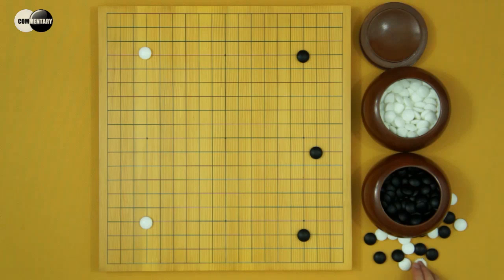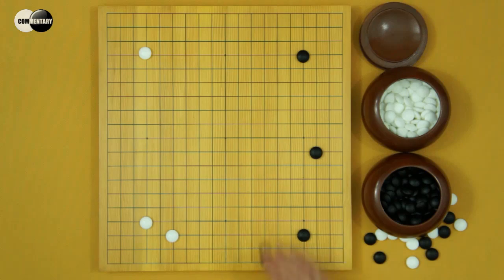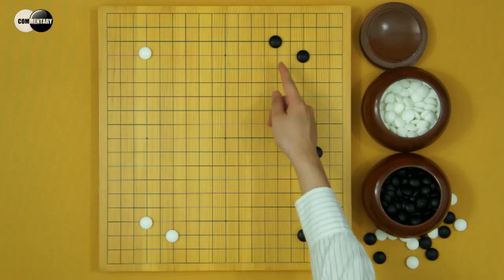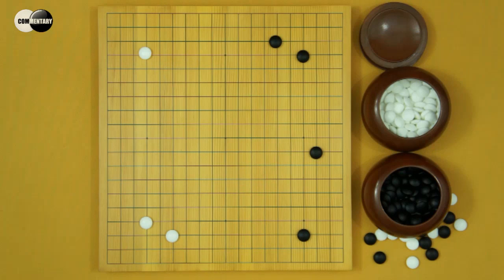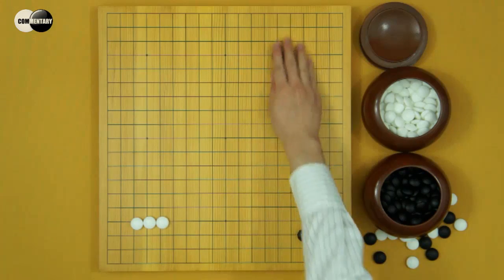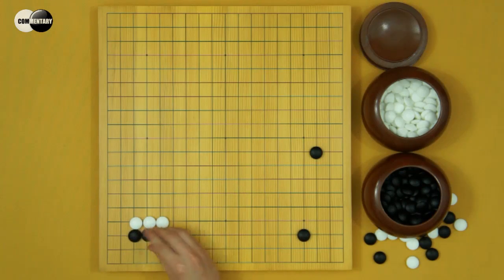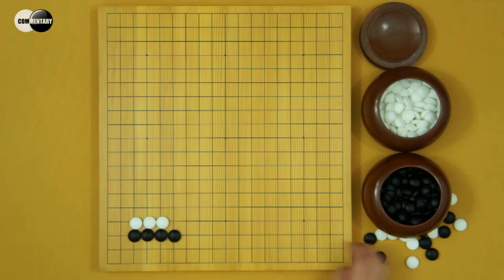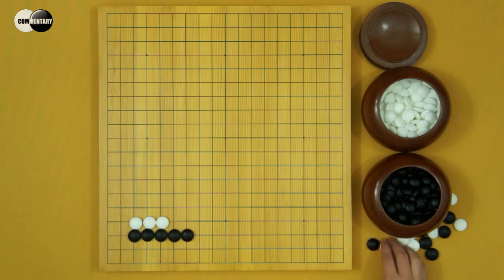So in this situation, White a keima. And Black can also play keima. These two moves seem very simple. But you have to know the meanings behind them.